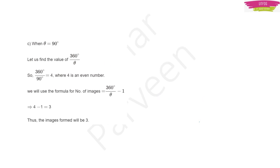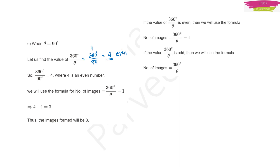Another example: if θ = 90°, substitute to get 360/90. The zeros cancel, giving 4, which is an even number. Since 360/θ is even, use number of images = 360/θ − 1 = 4 − 1 = 3. So the number of images is 3.